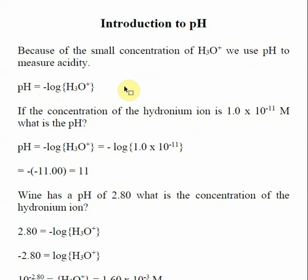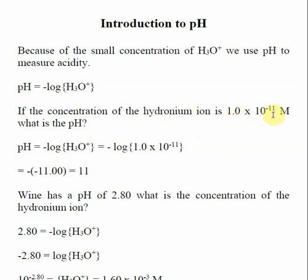One of the important skills is, if you're given a concentration of hydronium, to calculate the pH. As we go along, when we start looking at Ka reactions, what we're going to end up with is calculating a concentration of hydronium, and then typically we're going to represent that answer as a pH. So if I give you a concentration of hydronium of 1.0 times 10 to the minus 11th, you need to calculate the pH.